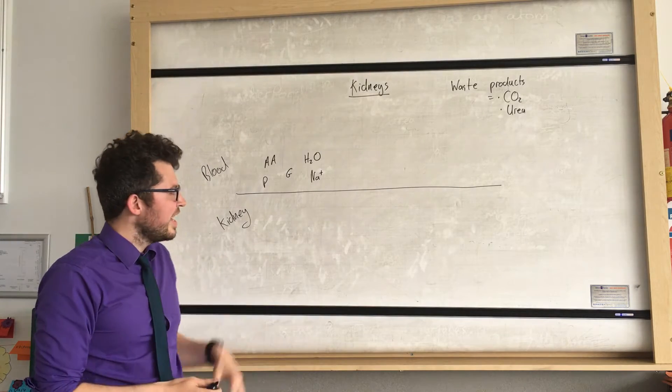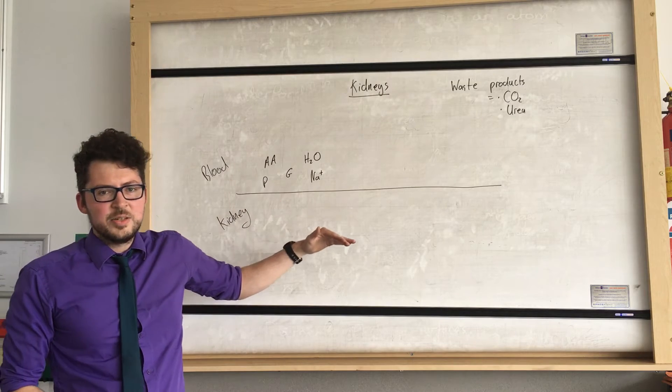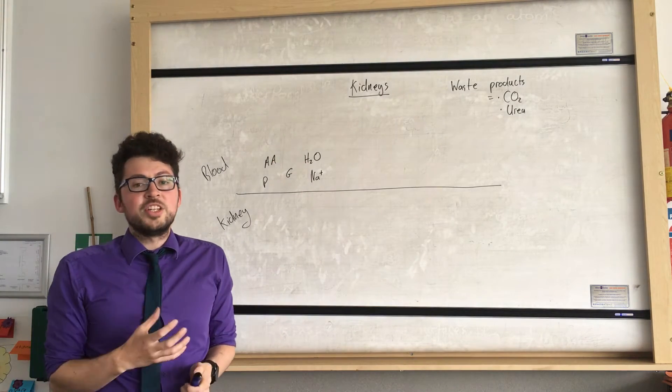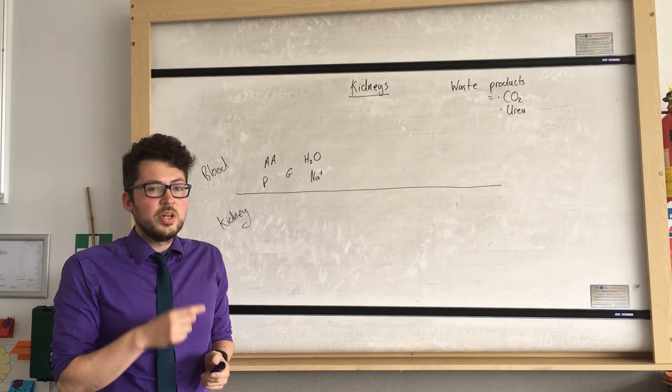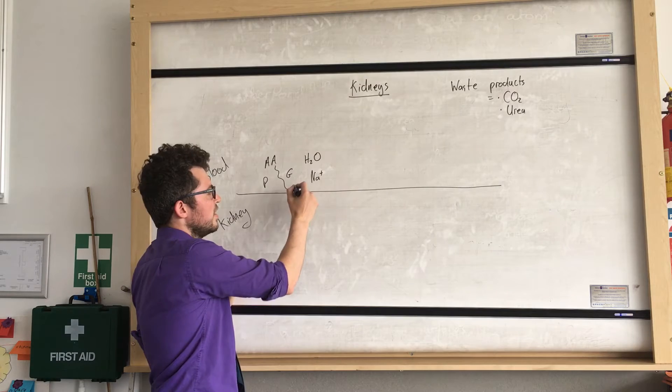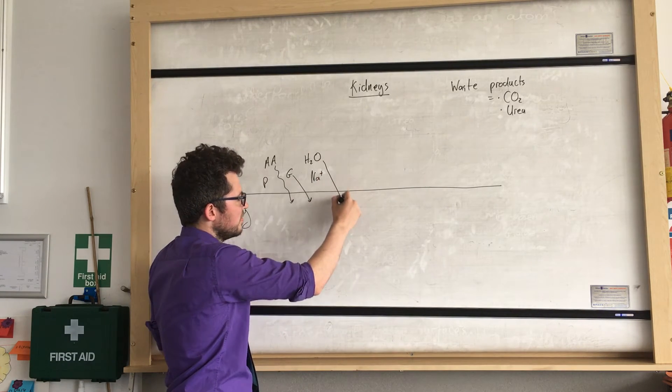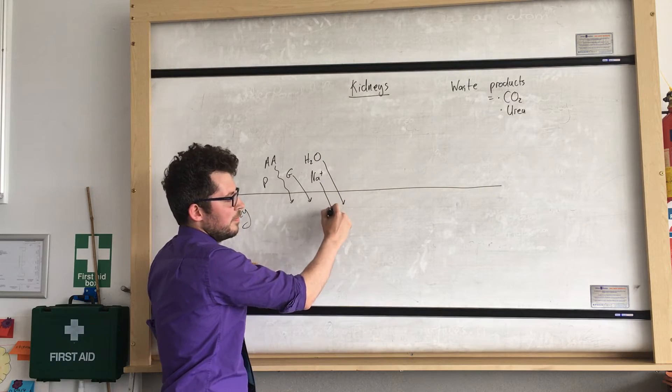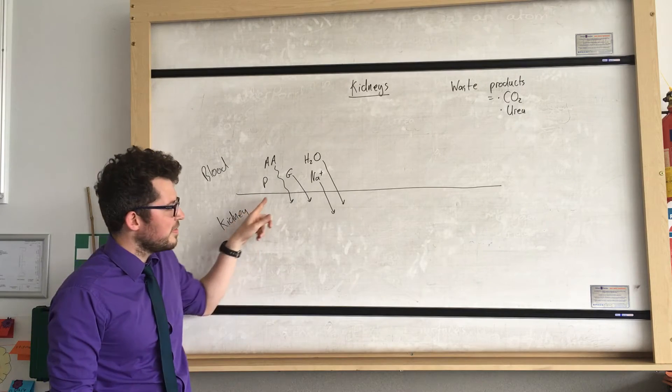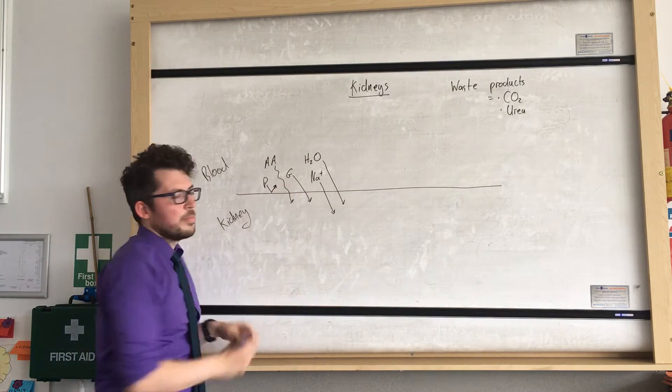Now what happens is initially everything that can fit out of the blood and into the kidney moves into the kidney. So this is called filtration. All the materials that can fit through do fit through. Amino acids move through because they're small. Glucose moves through. Water moves through. And salts move through. Now protein can't fit through into the kidney because it's too large to fit through those membranes. So protein will remain in the blood.